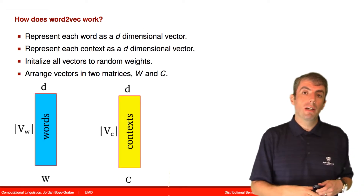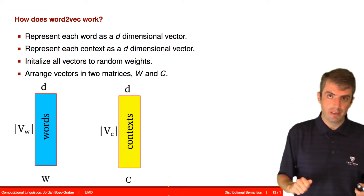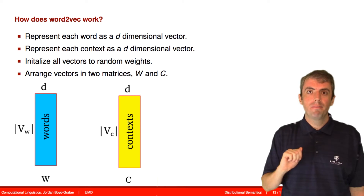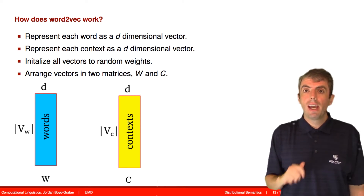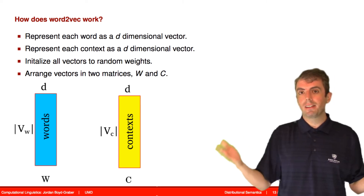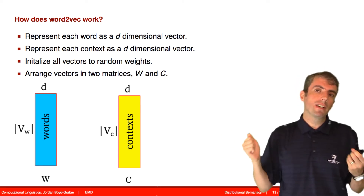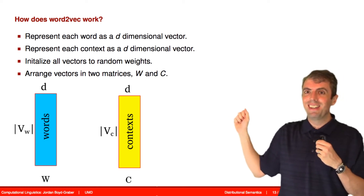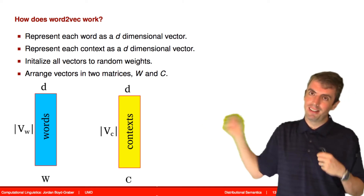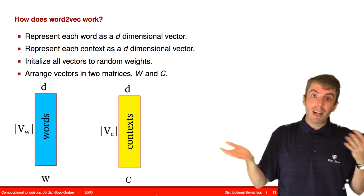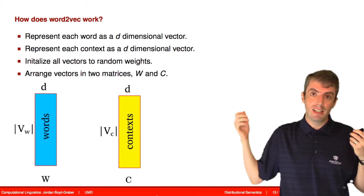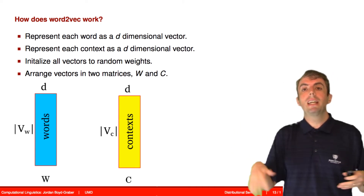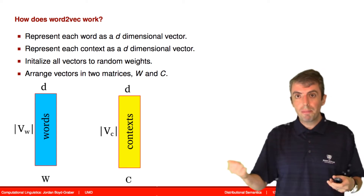Word2Vec learns two matrices. Each matrix is V-by-D — it has a row for every word and a column for each dimension being learned. There are separate matrices for words and for contexts, with no specific relationship tying a row for a specific word between the word matrix and the context matrix. They'll have some correspondence because of the inherent properties of the data. You initialize these matrices randomly and then update them by looking at data.